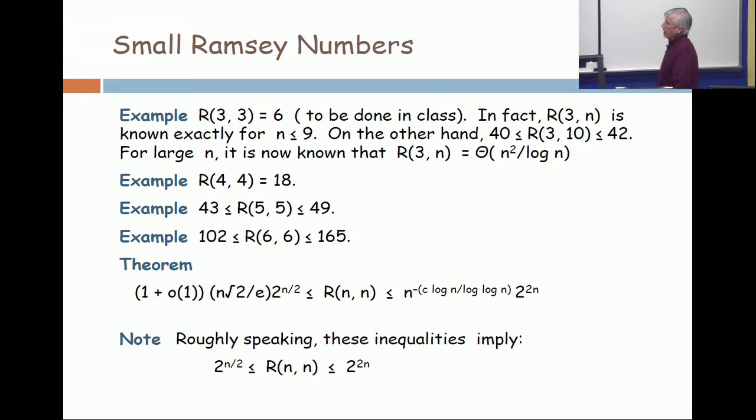And for large n, it's now known that R(3,n) is Θ(n²/log n). In other words, there's a constant where it's at least a constant times n² over log n, and there's another constant where it's at most constant times n² over log n.